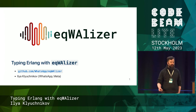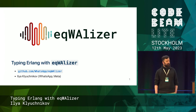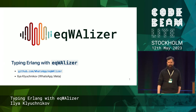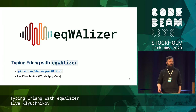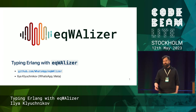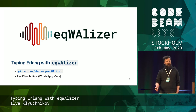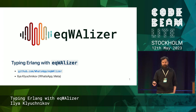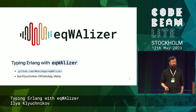My name is Ilya. I work for WhatsApp, part of Meta. In our code base in Erlang, we have quite a lot of code — hundreds of applications, thousands of modules, and millions of lines of code.